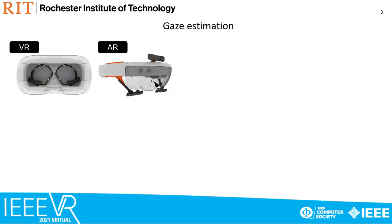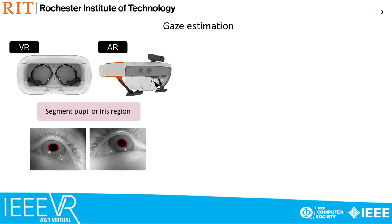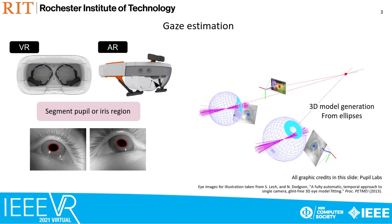Recent approaches towards gaze estimation involve two near-infrared eye cameras which capture eye movements. Computer vision and machine learning algorithms segment the pupil or iris regions to generate an ellipse fit. These ellipse fits are used to estimate the pose of an approximate 3D eyeball model. Vectors originating at the eyeball center are extended through the 3D pupil center to generate a gaze estimate.